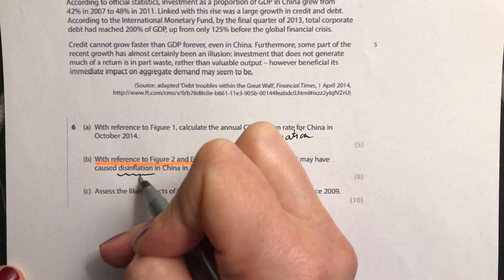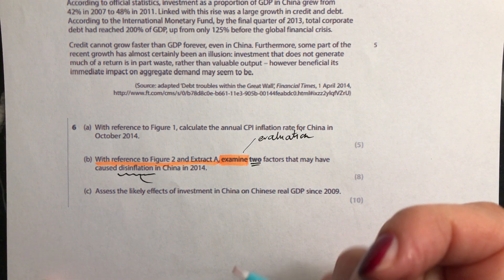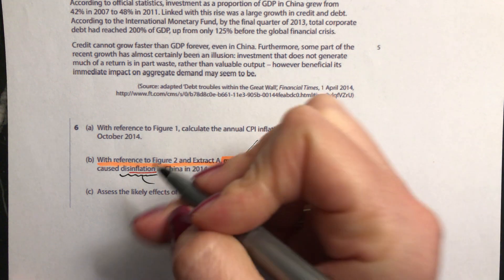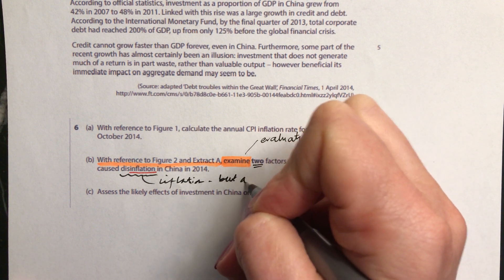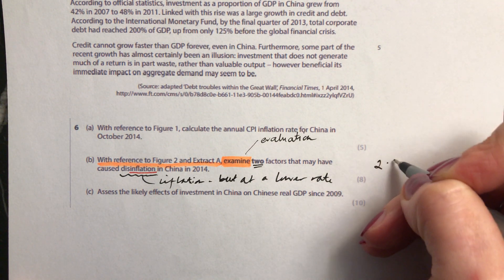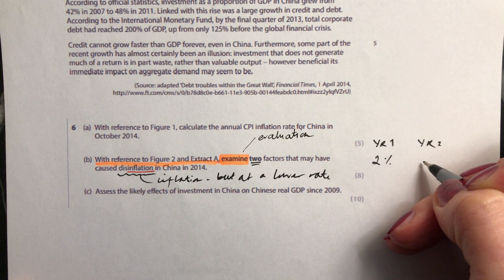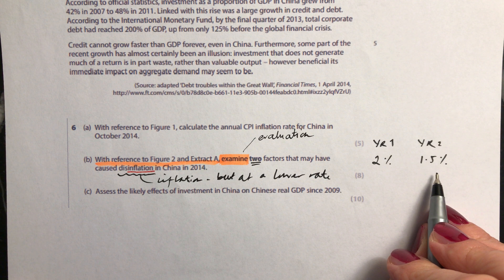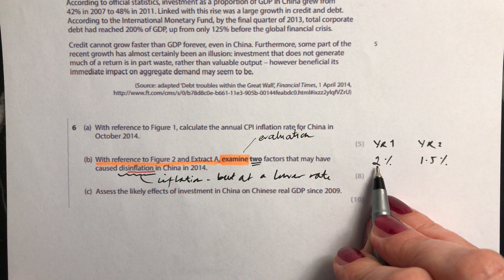You need to know what disinflation is. An easy way to remember it is that the word disinflation still has the word inflation in it. Disinflation is where you still have inflation, but at a lower rate. For example, in year one your inflation might be 2%, and then in year two it might be 1.5%. You still have inflation — a sustained increase in the average price level — but in year two it's a smaller increase than in year one.